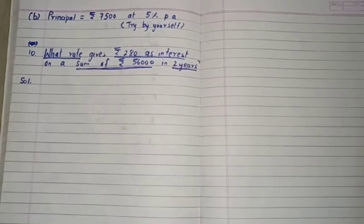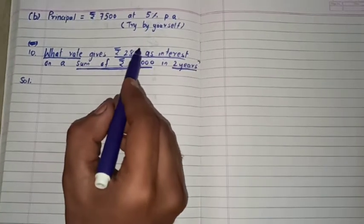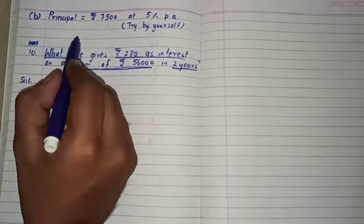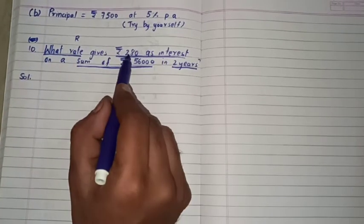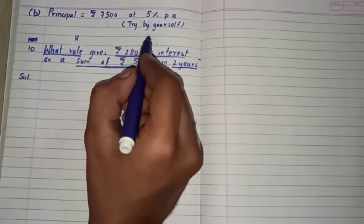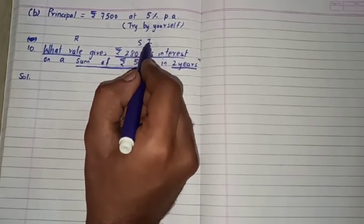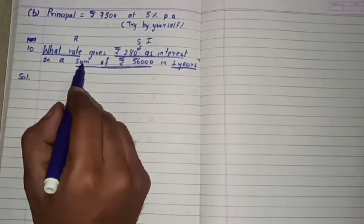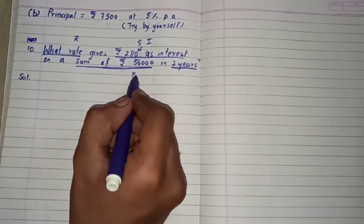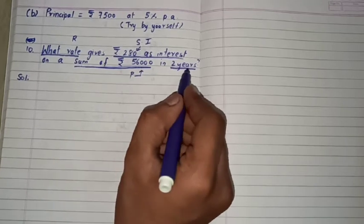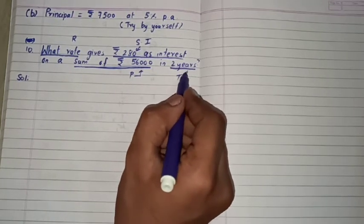Yane T yahaan per dekh liege. Rate humko pata karna hai to yahaan per rate hum assume kar lenge R, or rupees 280 as interest to yane value ho jaye ki simple interest ki, or sum of rupees 56,000 yane value ho ga humara principal amount ka, or two years jo hai yane ho ga time ka value.